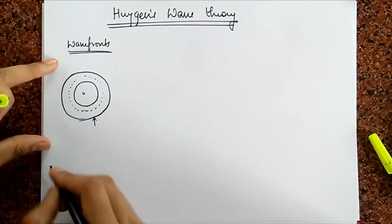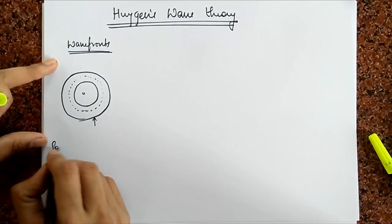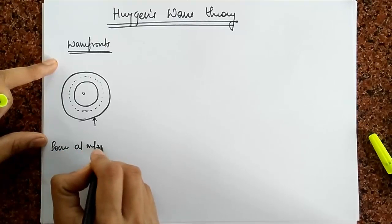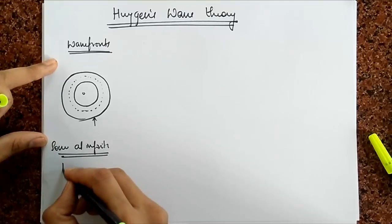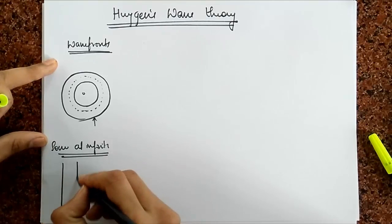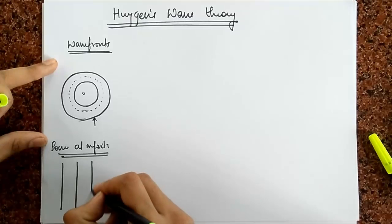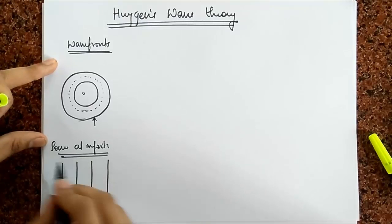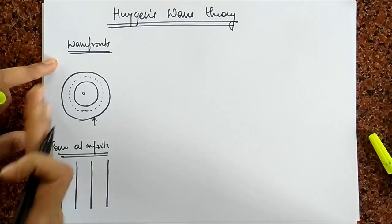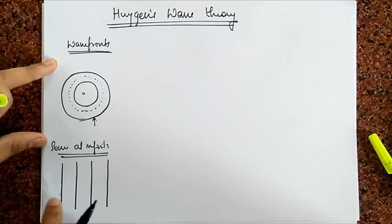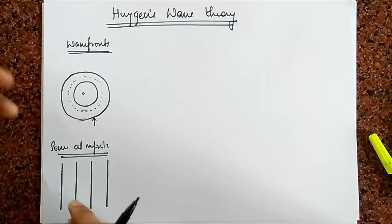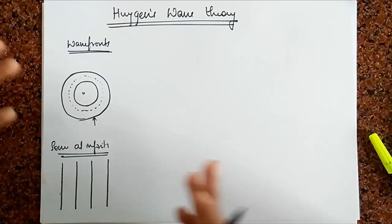So if the source is at infinity, then the wave fronts that you end up getting are plane wave fronts. What that means is that all the particles on this plane are in the same phase. So maybe they are at their maxima, they are at minima, or whatever.